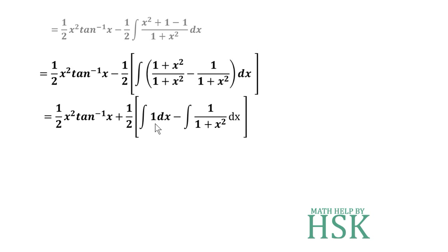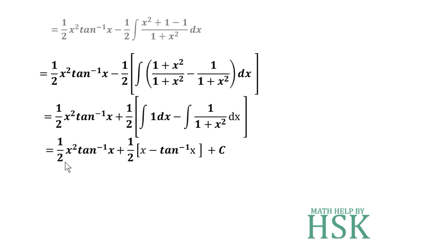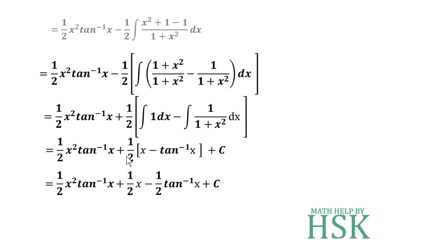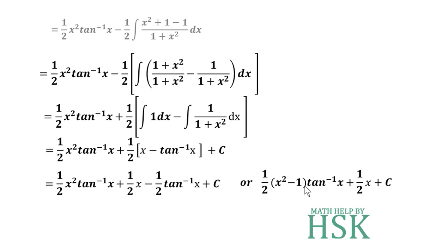The integral of 1 is x, and the integral of 1/(1+x²) is tan⁻¹(x). So we get (1/2)x²·tan⁻¹(x) plus (1/2)(x − tan⁻¹(x)) plus C. Opening the bracket gives (1/2)x − (1/2)tan⁻¹(x). Both terms contain tan⁻¹(x), so combining them gives (1/2)(x²−1)·tan⁻¹(x) + (1/2)x.